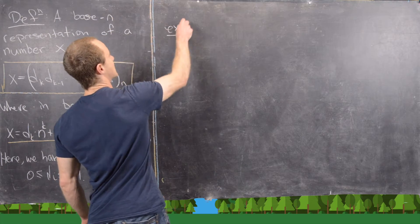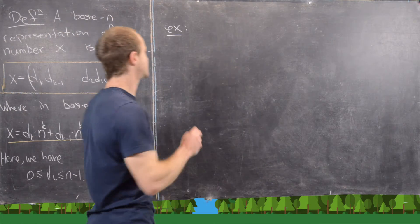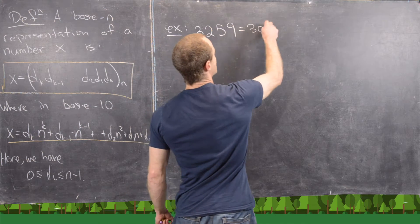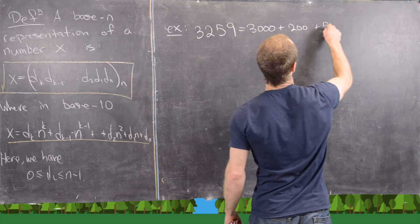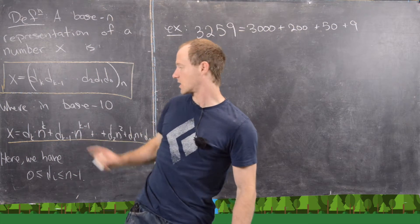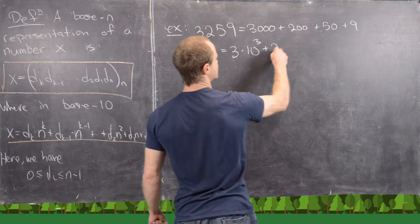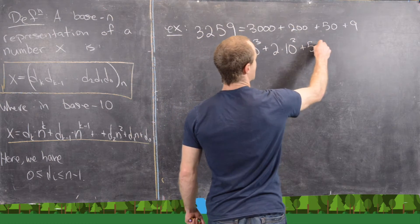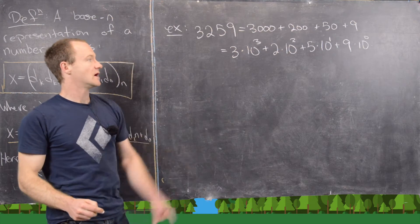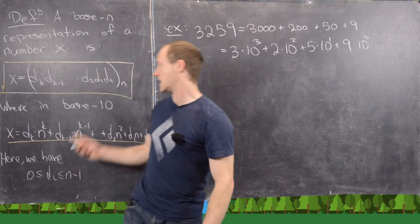The first example is that our normal base-10 representation is already set up for this. Let's look at the number 3,259. We can write this as 3,000 plus 200 plus 50 plus 9, and each of those are built in this form. The thousands place is 3 times 10 cubed, the hundreds place is 2 times 10 squared, then we have 5 times 10 to the 1, plus 9 times 10 to the zero. This is a good way of looking at a number we already know in a base we already understand, written in this more formal way.